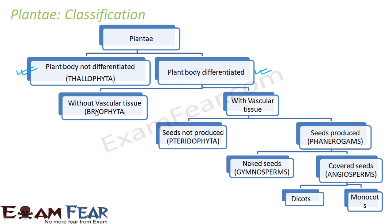Vascular tissue was discussed in detail in class 9th in the lesson on tissues. These are the tissues present in plants which help in conduction of water and minerals to different parts of the plant. You might ask how plants without vascular tissue conduct water and minerals — we will discuss that later, but there are some disadvantages to not having vascular tissue. Plants without vascular tissue were known as bryophytes.